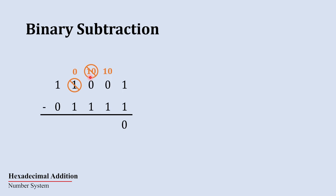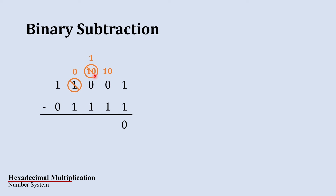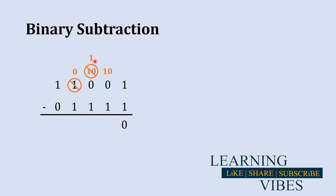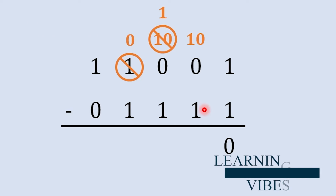Now this column, which received the borrow and became one-zero, is capable of giving a borrow to the previous column. It gives one borrow to the left, so it becomes one-zero (2), gives away one, and what remains is one. That is why we get one at that position.